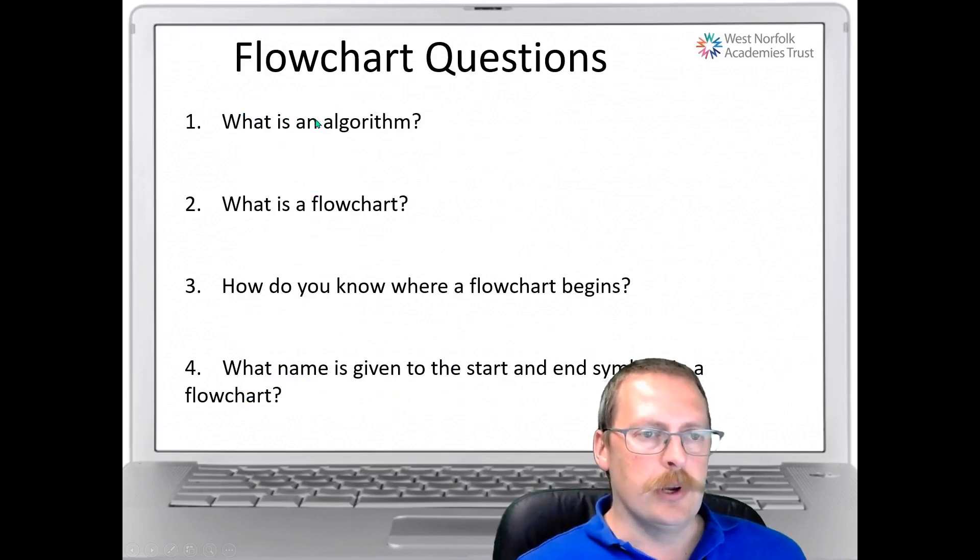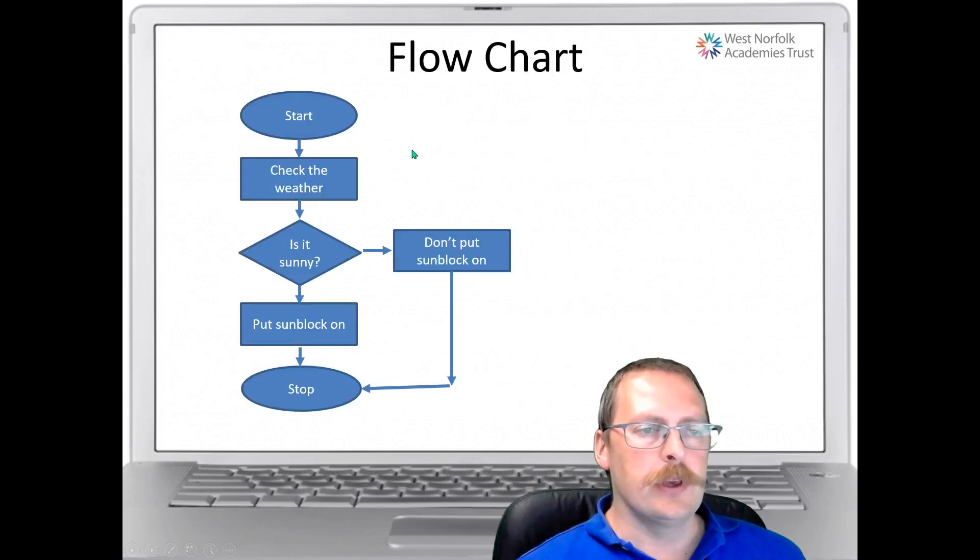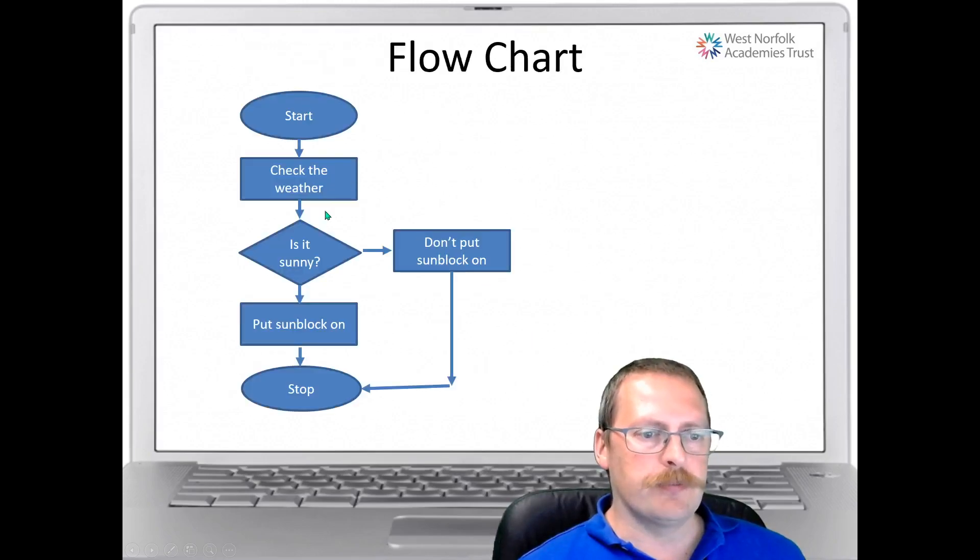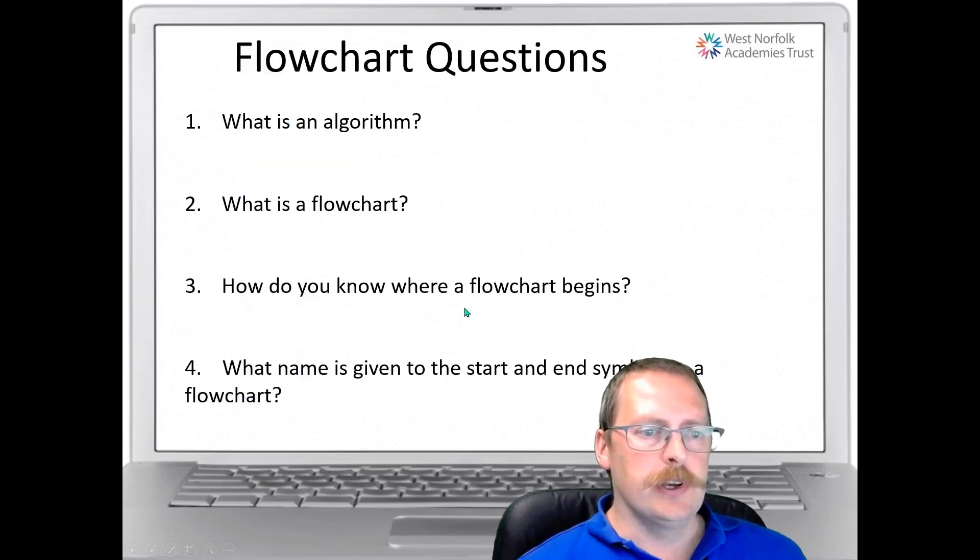So you need to know and write in your e-portfolio what an algorithm is. You need to say what a flowchart does, and we need to know where a flowchart begins. So if we look back, we can see where a flowchart begins. You need to explain this. What name is given to the start and end symbols in a flowchart? So what do we call these shapes? So that's the first bit of information you need.